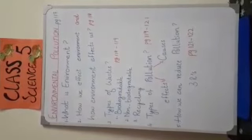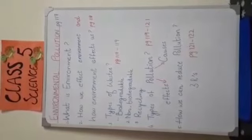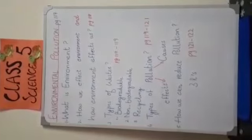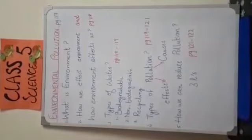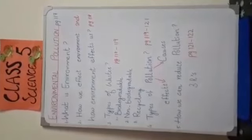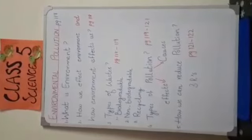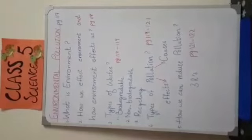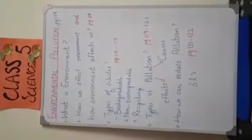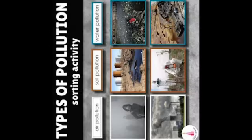There are many things which are being left out and being piled up in big heaps. These materials affect our land, air, and water and cause pollution. Now girls tell me how many types of pollution are there? Yes, there are three types of pollution: land, air, and water.